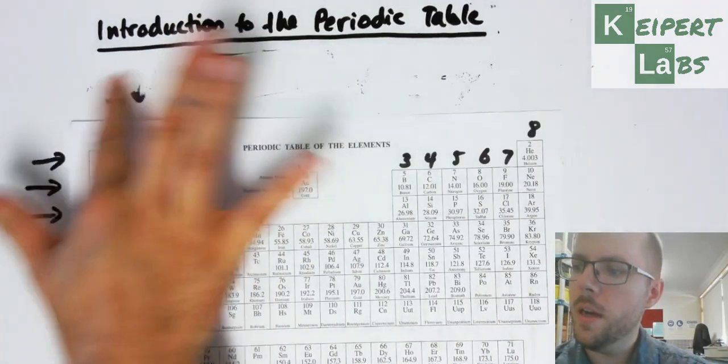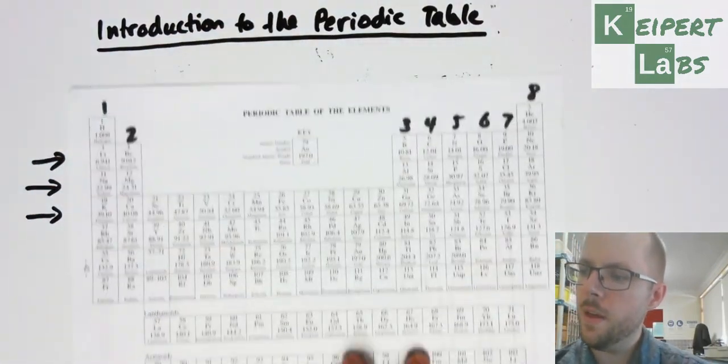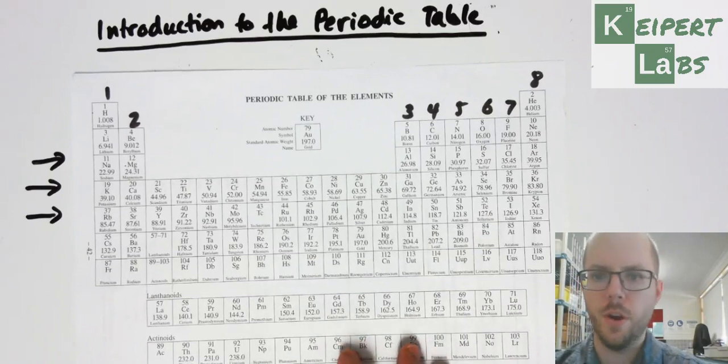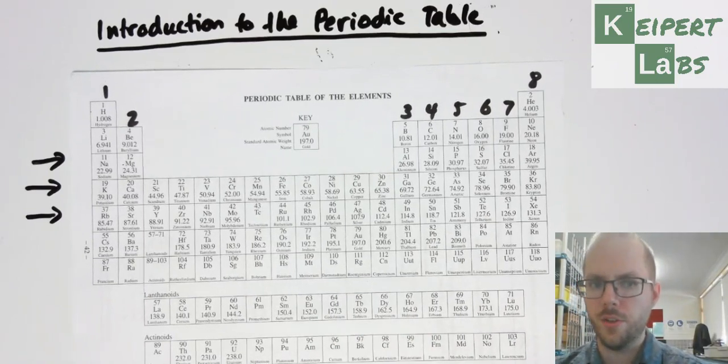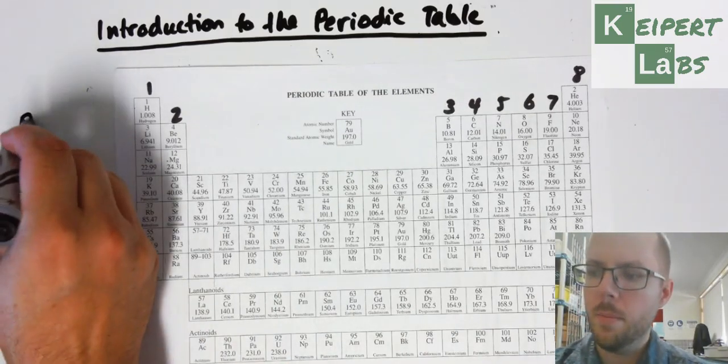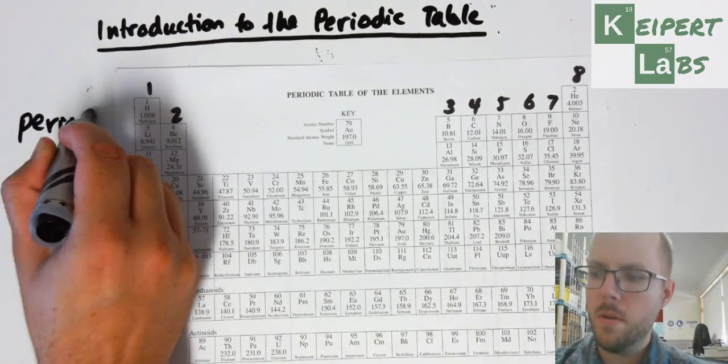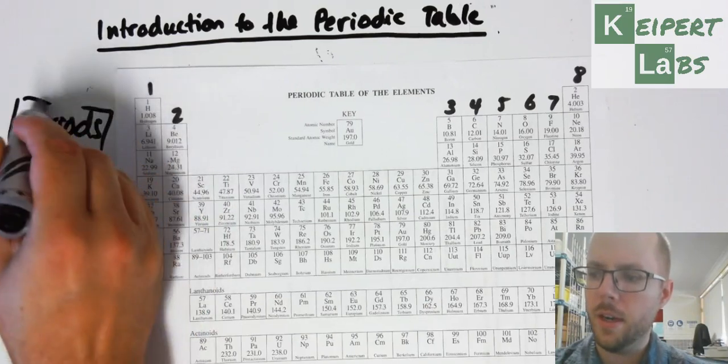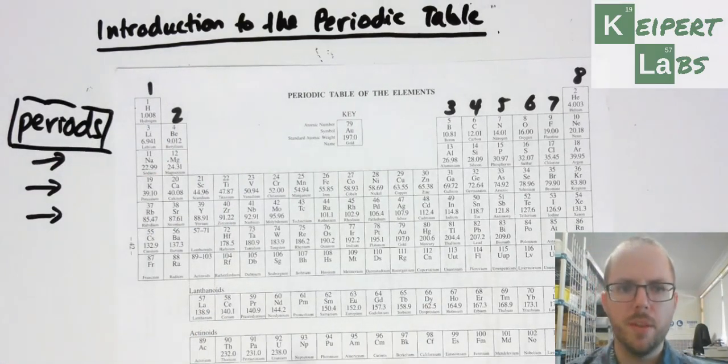If the columns are known as groups, then we think, okay, well what are these rows known as? They're not known as rows either. They're known as periods. That's the other key terminology that you need to be familiar with - our rows are known as periods.